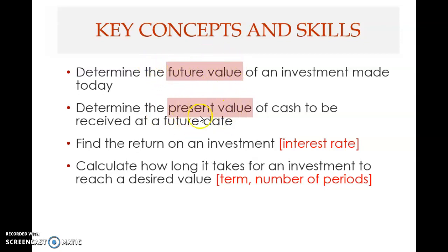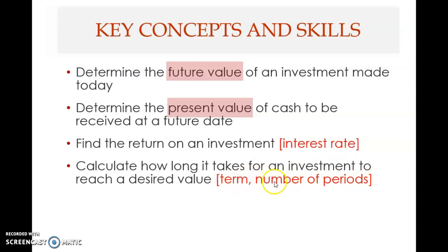The third key concept is to find the return on investment, which we call the interest rate. The fourth key concept is to calculate how long it takes for an investment to reach a desired value — called the investment term or number of periods. So those are the four key concepts in this chapter.